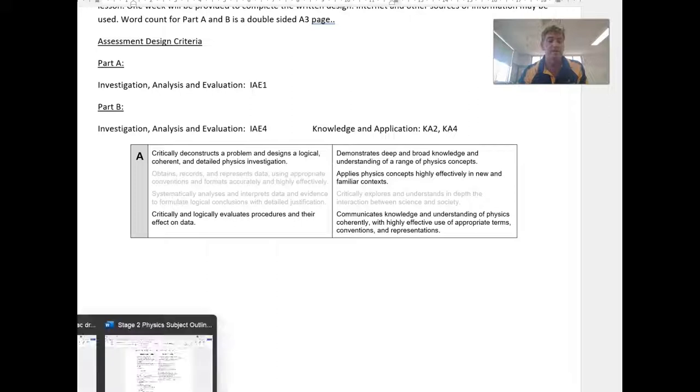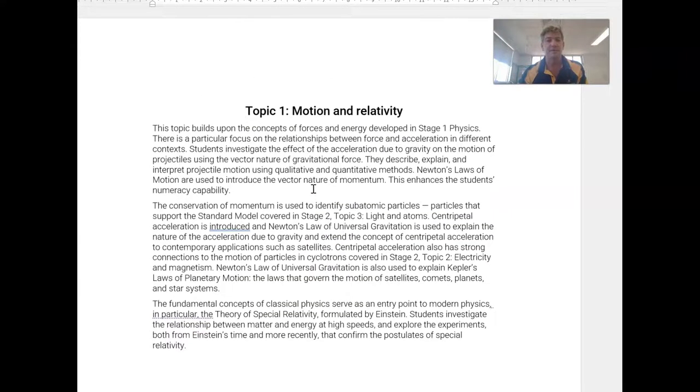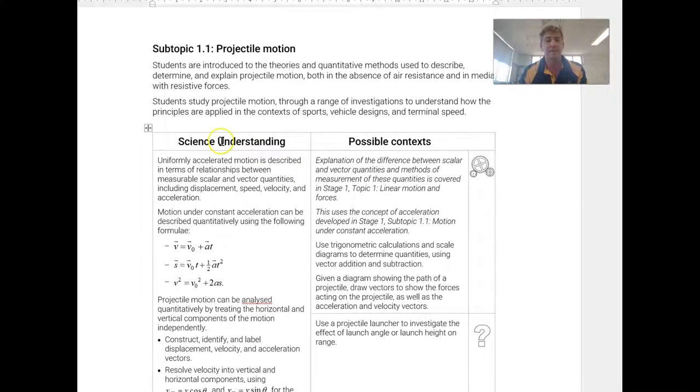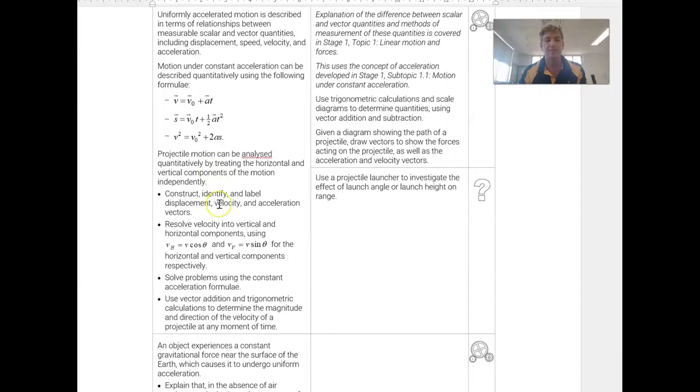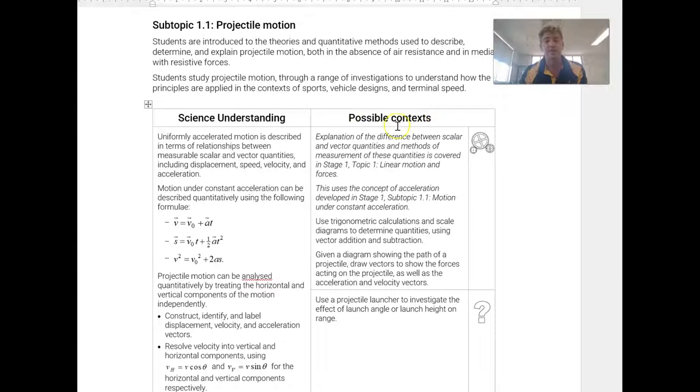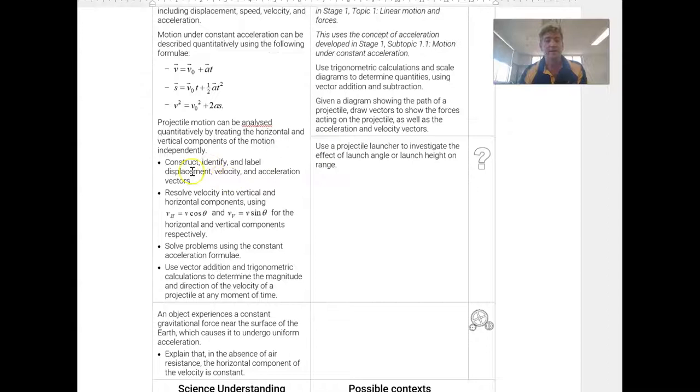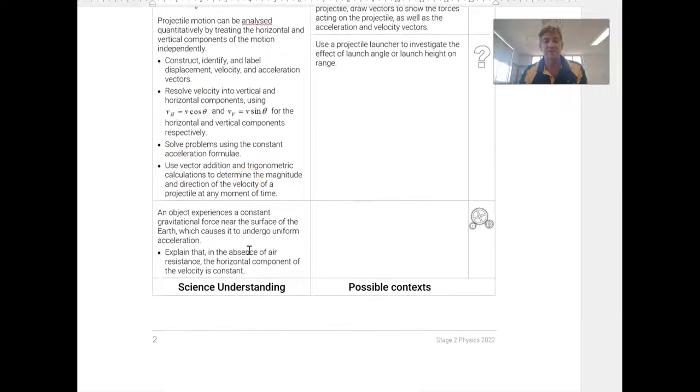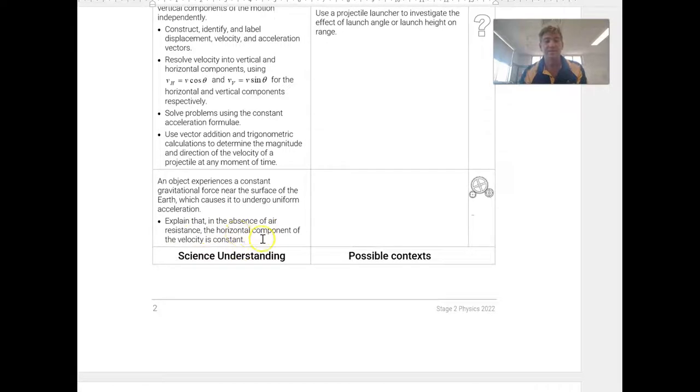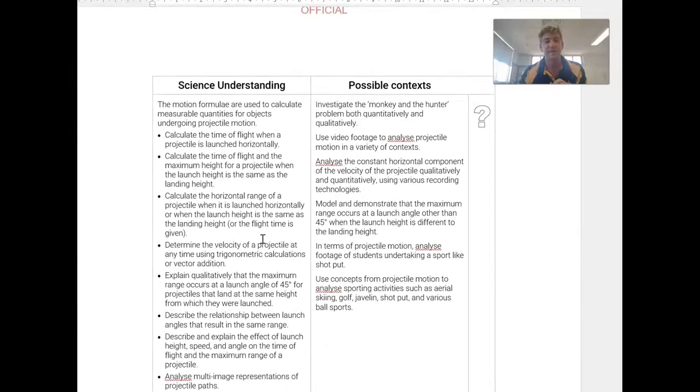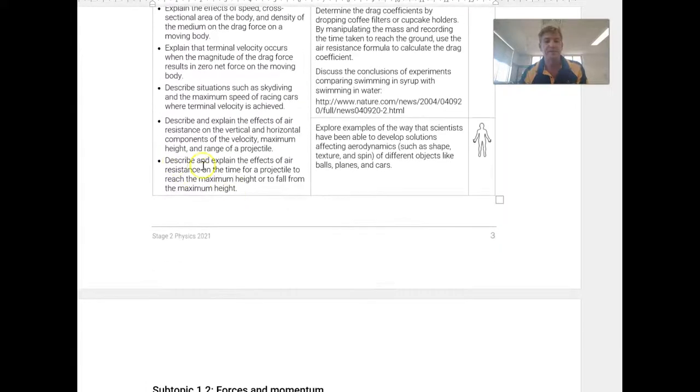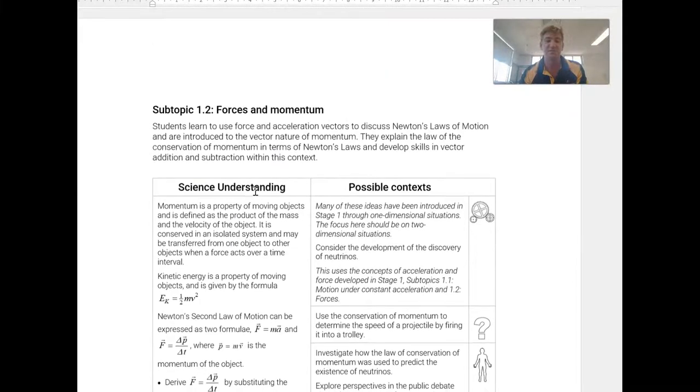So to show you the dot points that I mean, here is the Stage 2 Physics subject outline, and what I've done is chopped out the intro pages because I don't need them. This is just the content and the science understanding on the left hand side. Remember, everything here is open to investigation and open to examinable content, and the possible context that it might be delivered in on this right hand side. So construct, identify and label displacement, velocity, and acceleration vectors. It may or may not come out that my drone investigation would use this. However, things like vector addition, trig calculations, they probably could. Explain that in the absence of air resistance horizontal component velocity is constant. Probably not, but the fact that there is explained qualitatively that the maximum launch angle, whatever, describe and explain the effect of air resistance on the time for a projectile to reach maximum height. Probably also not.